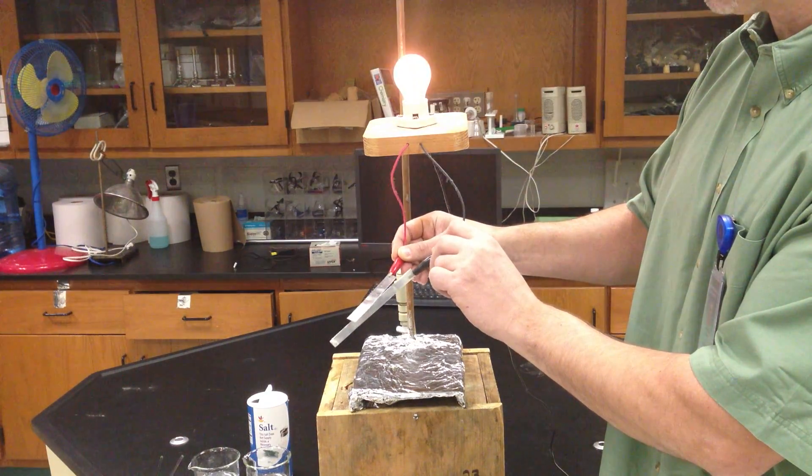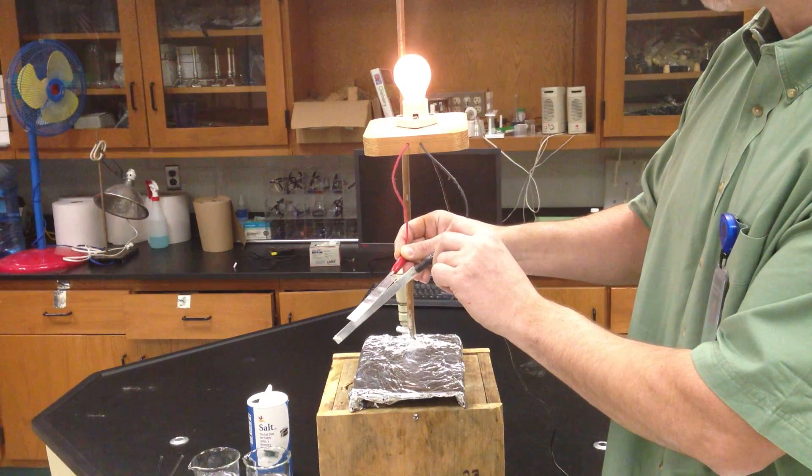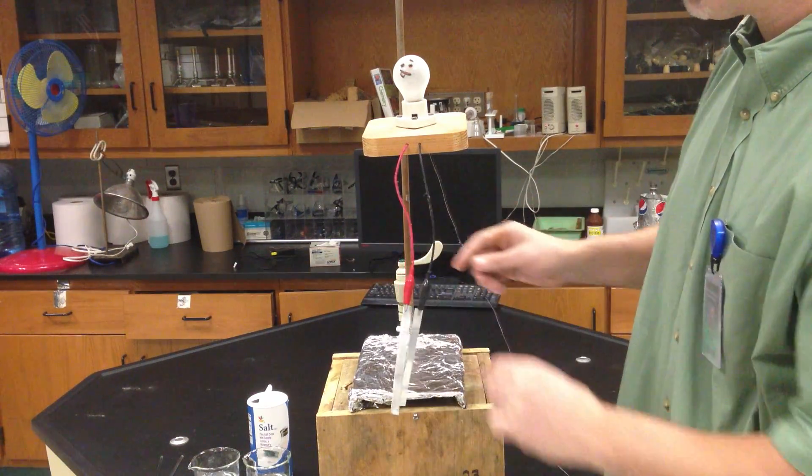That's why rubber wouldn't work. It's a good insulator. But metals, because they hold on to them loosely, allow electrons to repel each other and move charge along. But this is a little different demonstration.